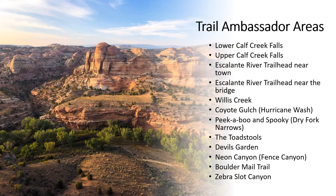The main areas where Trail Ambassadors will do their work include Lower Calf Creek Falls, Upper Calf Creek Falls, Escalante River Trailhead near Town, Escalante River Trailhead near the Bridge, Willis Creek, Coyote Gulch, Peekaboo and Spooky, the Toadstools, Doubles Garden, Neon Canyon, Boulder Mail Trail, and Zebra Slot Canyon. GSEP works with BLM staff to identify the most important areas. Locations and volunteering frequency may vary based on season, day of the week or holiday, and visitation patterns.